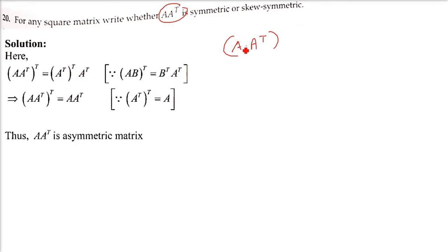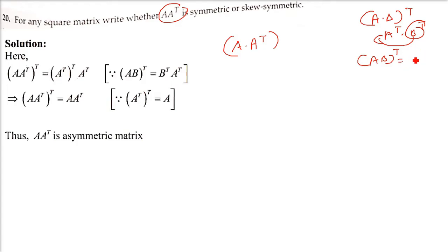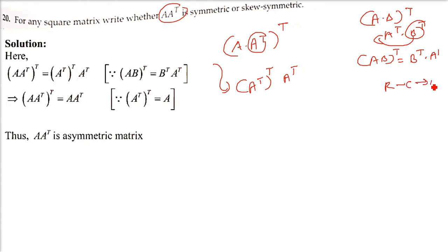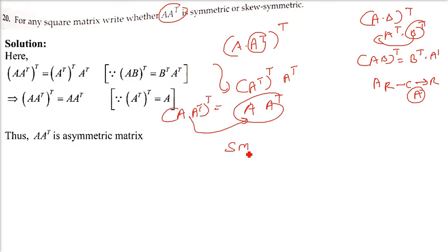We take the transpose of A·Aᵀ. Using the property (AB)ᵀ = Bᵀ·Aᵀ, we get (A·Aᵀ)ᵀ = (Aᵀ)ᵀ · Aᵀ. Now, the transpose of a transpose returns the original matrix, so (Aᵀ)ᵀ = A. Therefore (A·Aᵀ)ᵀ = A·Aᵀ, which means the same matrix is obtained — this is a symmetric matrix.